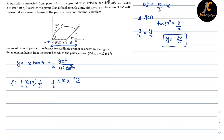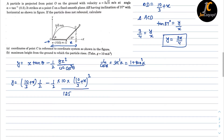Continuing, u² = (5√5)² = 125. For 1/cos²α, we use sec²α = 1 + tan²α. Since tan α = 1/2, we get 1 + 1/4 = 5/4. So the term 1/cos²α is replaced by 5/4.